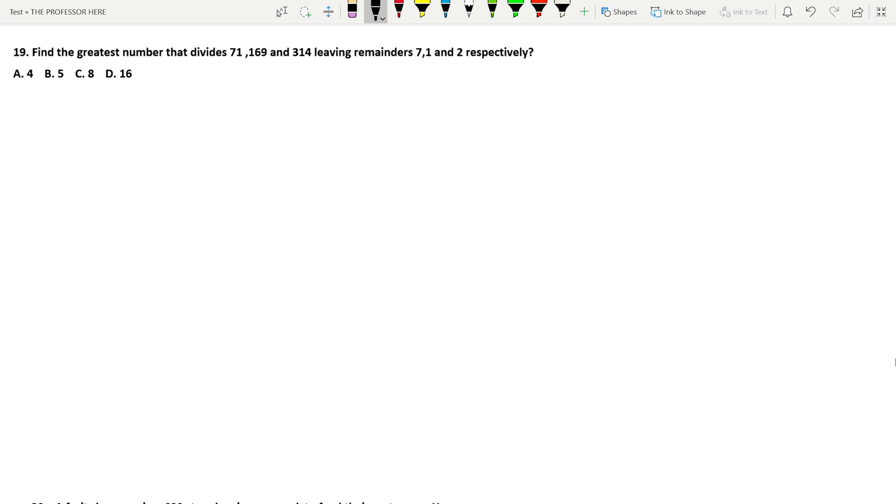Question number 19. Find the greatest number that divides 71, 169, and 314 leaving remainders 7, 1 and 2 respectively.